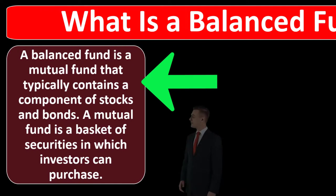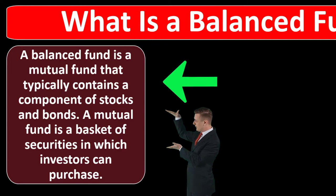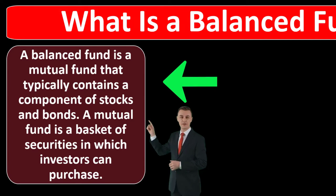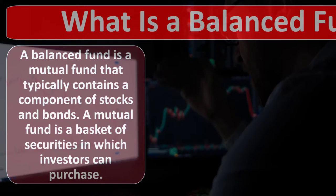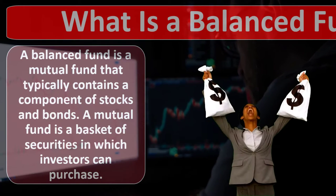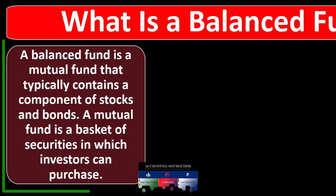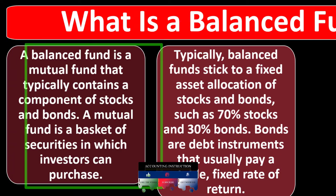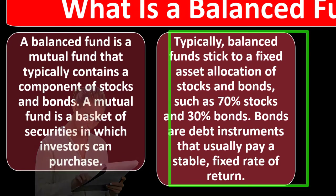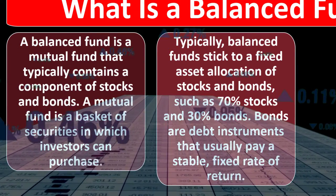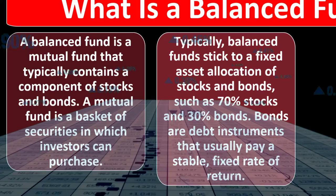A balanced fund is a mutual fund that typically contains a component of both stocks and bonds. A mutual fund is a basket of securities in which investors can purchase shares. As an individual investor, putting money into individual stocks and bonds can be difficult and expensive — hard to diversify. Therefore, we might use tools such as mutual funds and ETFs, pooling our money with other investors, and the fund manager uses that pooled money to invest in a broader basket, providing diversification. Typical balanced funds stick to a fixed asset allocation such as 70% stocks and 30% bonds.